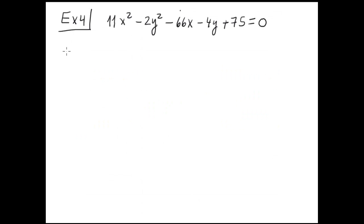Example 4. Now complete the square. 11 is a common factor in the X term. We have X squared minus 6X plus box. Minus 2 is a common factor in the Y term: Y squared plus 2Y plus box. This equals, in the right hand side, we have minus 75 plus the two boxes.